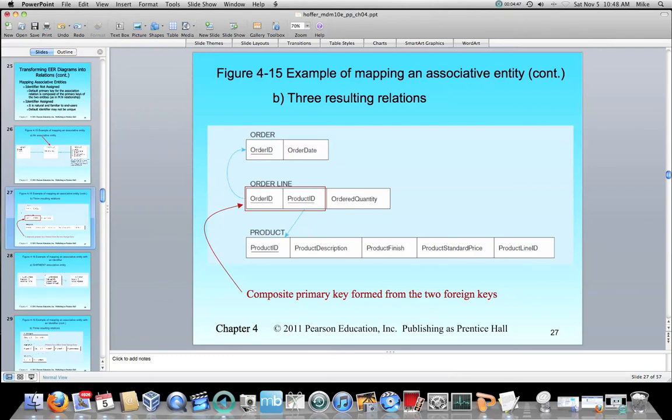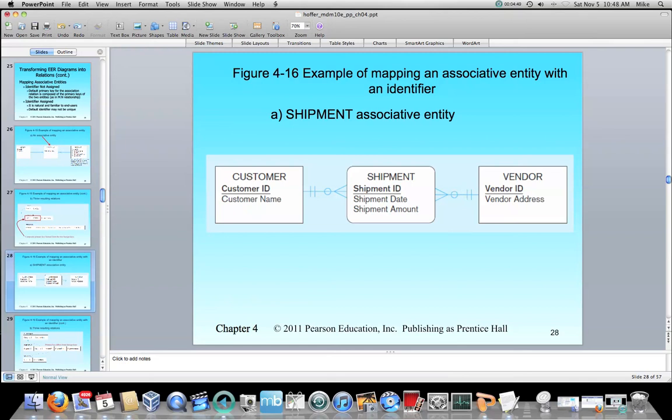So now here's another example. So we've got a customer and a vendor, and the associative entity is keeping track of the shipments. Now in this case we're setting up an identifier, right? So shipment actually has shipment ID. All right, so let's take a look at what that looks like.